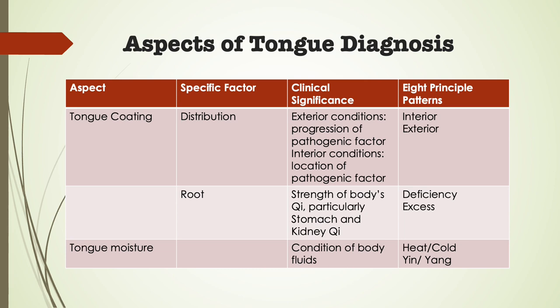If an organ is yin deficient, the tongue may manifest with a lack of coating in the area corresponding to that organ. A healthy coating should have root, be evenly distributed, and be slightly moist. Having root means the coating should appear to be growing out of the tongue and not just lying on top — like wheat growing up through soil rather than lying uprooted on top of the earth. When a coating lacks root, it can be easily scraped off, because the stomach, spleen, and kidney are not functioning as they should, and a new healthy coating is not being formed to replenish the existing coating from below. The old coating eventually loses its connection to its root and starts to fall off.